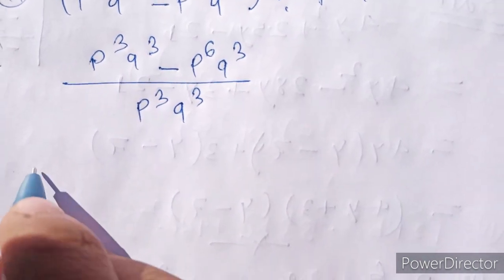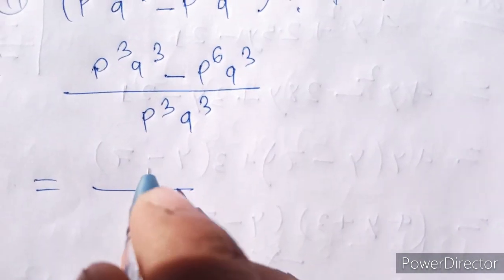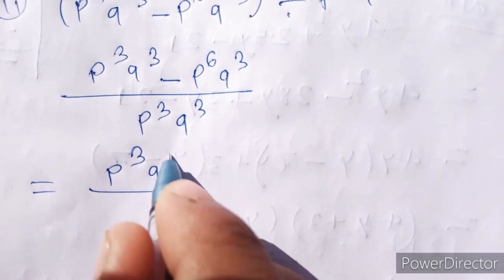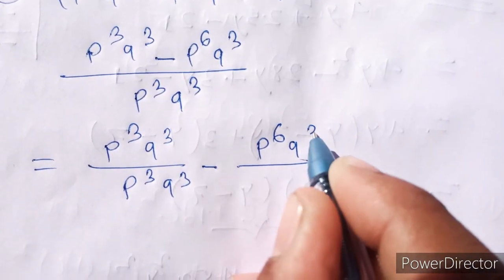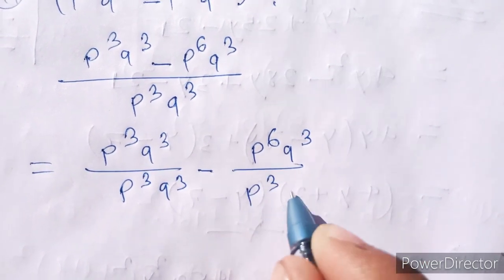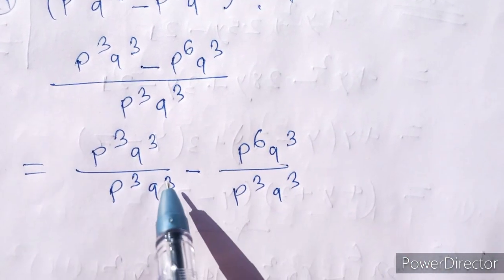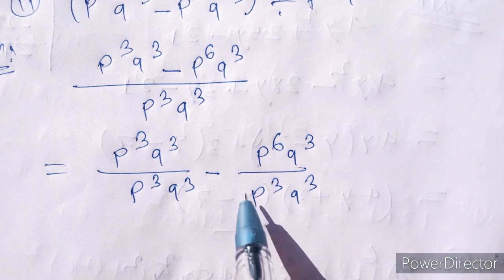P cube, Q cube, equal. And then we will put the same number here. P cube, Q cube. This is the same number here.